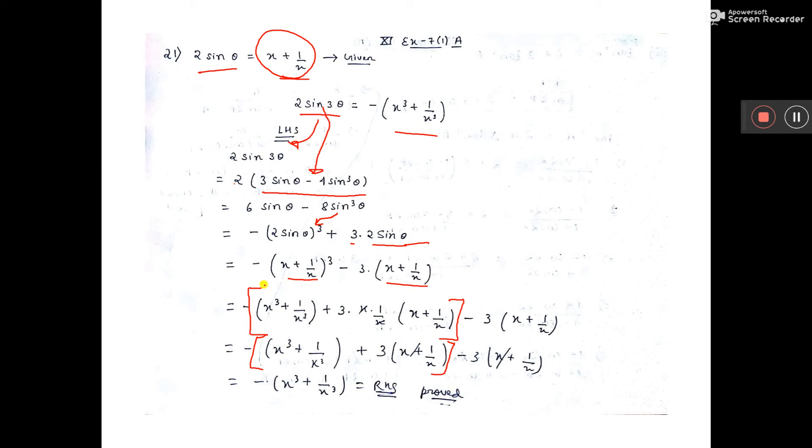here it is minus. Here again made mistake. See, a plus b whole cube formula: a cube plus b cube minus 3ab into a plus b. Oh, that means directly removed the bracket.